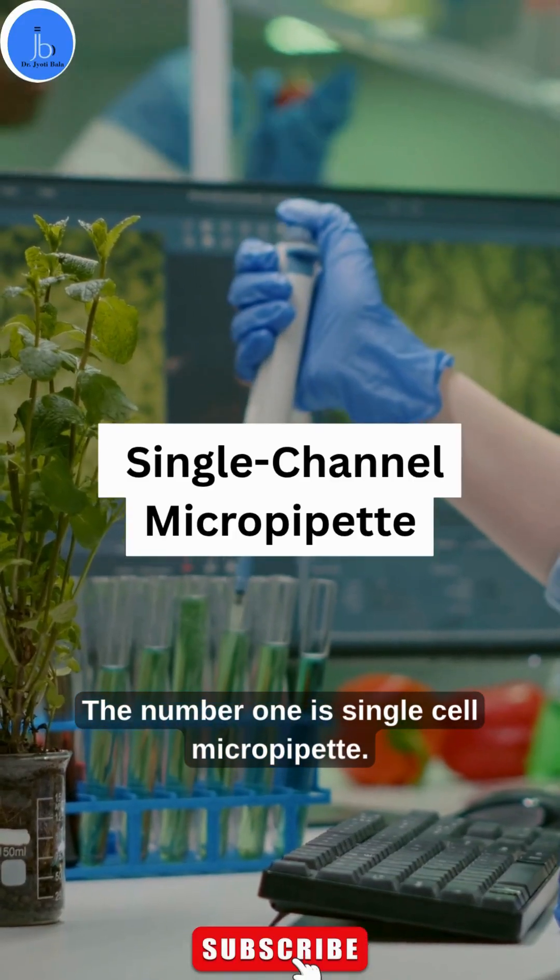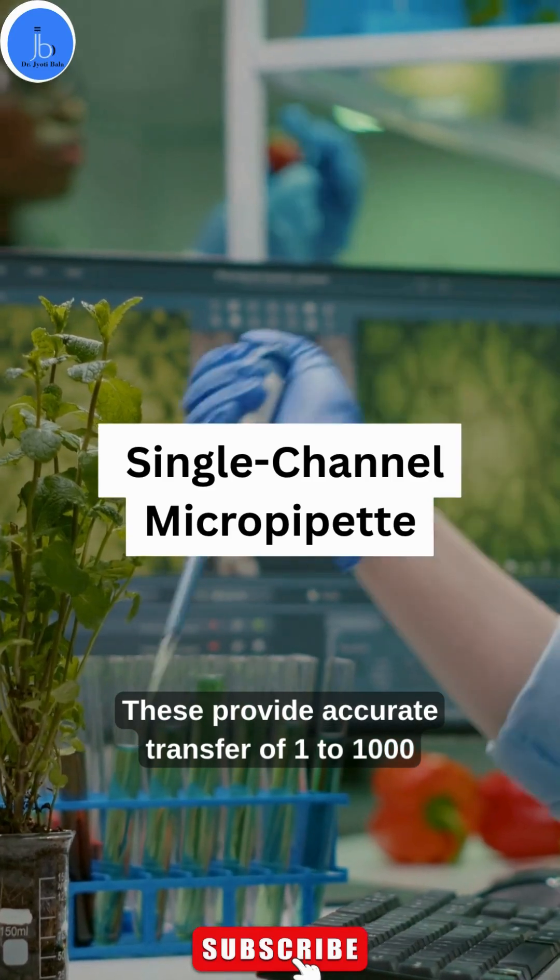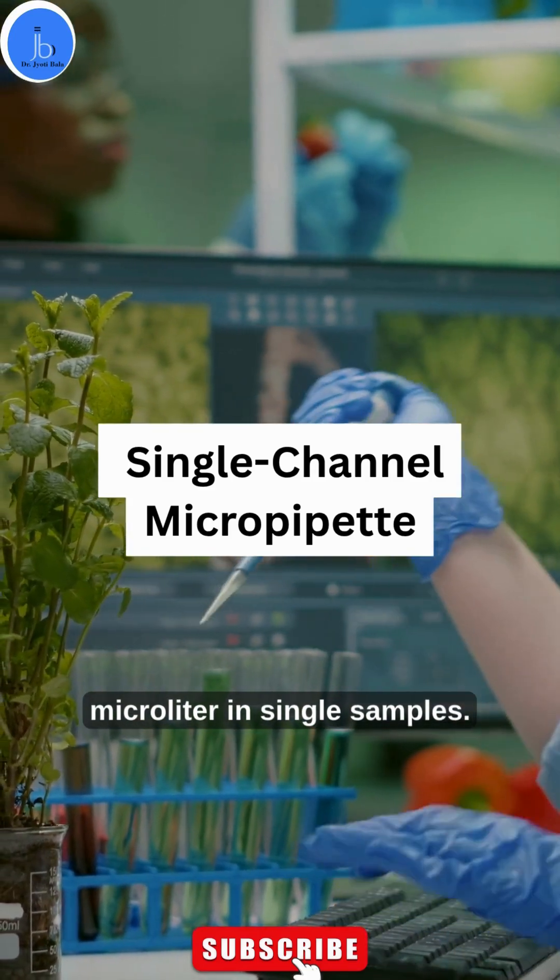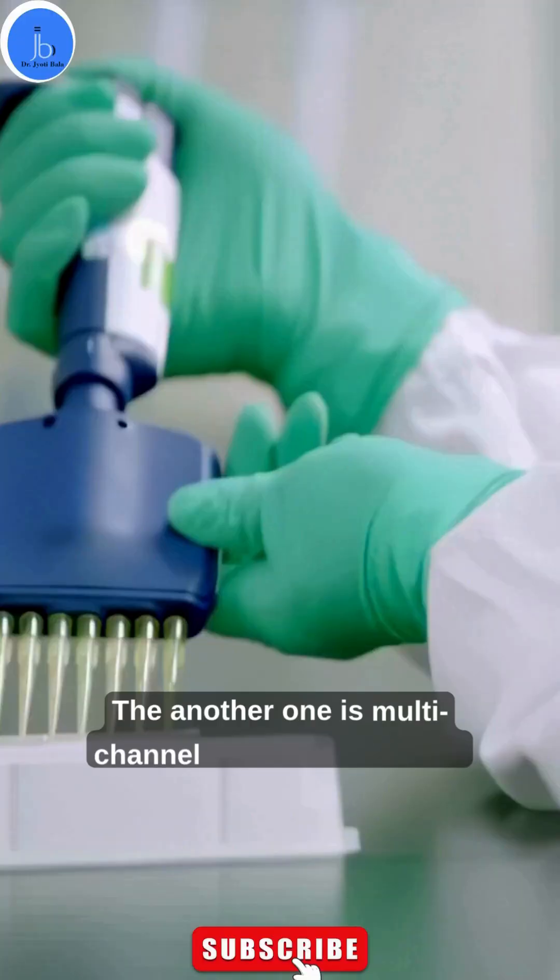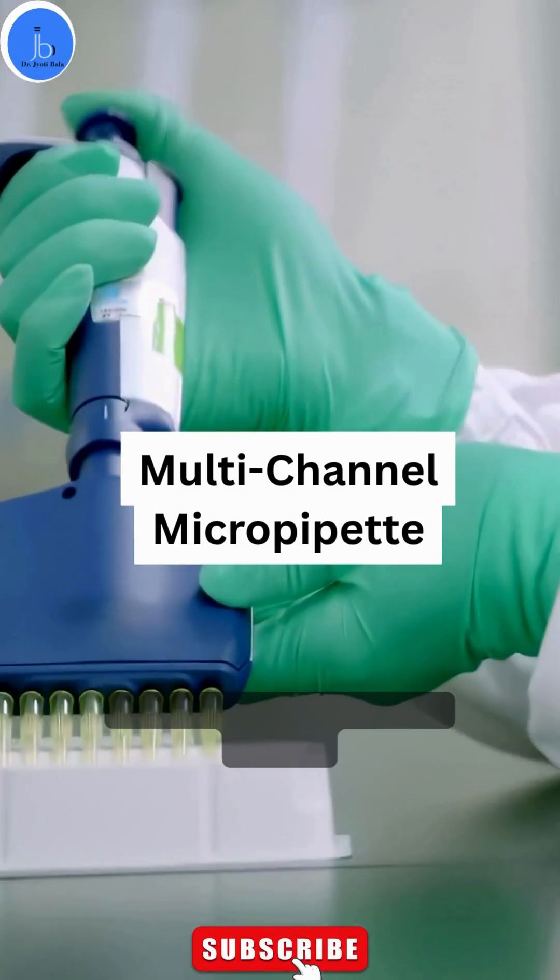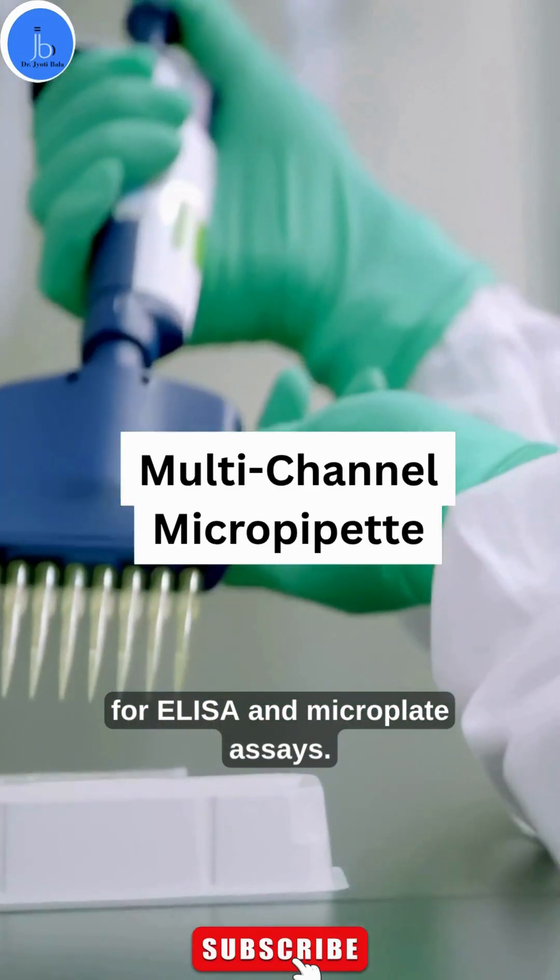Number one is the single-channel micropipette. These provide accurate transfer of 1 to 2000 microliters in single samples. Another type is multi-channel micropipettes, ideal for ELISA and microplate assays.